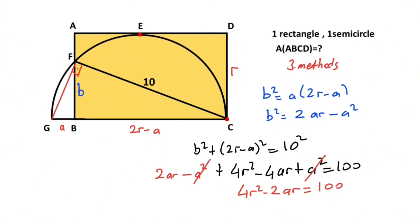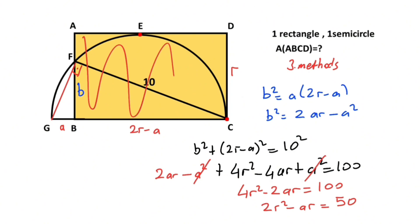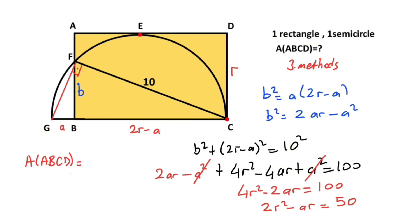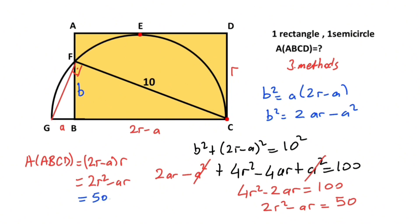Therefore, if you divide both sides of the equation by 2, we get 2r squared minus ar equals 50. Now the area of rectangle ABCD equals (2r minus a) times r, which equals 2r squared minus ar. Notice that these two expressions are equal, so the area of the rectangle is 50 square units.